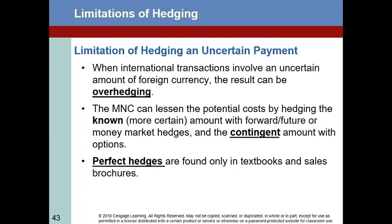The multinational can lessen potential costs by hedging the known — or the minimum — amount, that amount you're more confident you're going to need. Any excess or contingent amount should be handled with options, because options give you the flexibility of not having to exercise them if it's not to your advantage.